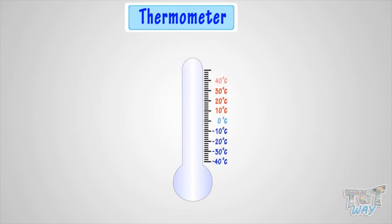There is a red or silver vertical line inside the thermometer. Temperature is shown in increasing order, starting from the bottom on this number line on the tube.